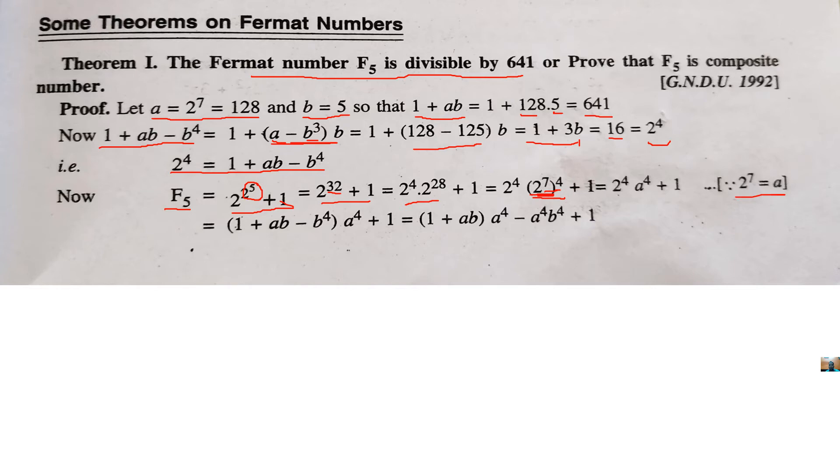Now, 2 raised to 4, we have already proved for it, this is value of this. So, use value of 2 raised to 4 here. Now, we have this expression. Now, multiply this part with these two numbers and multiply a fourth with only this number. We have this one plus 1.